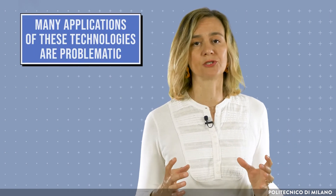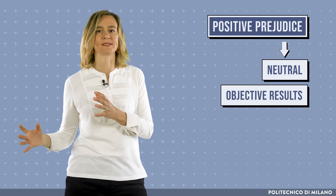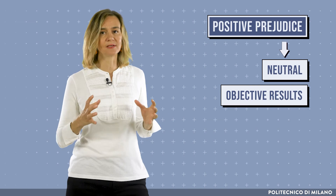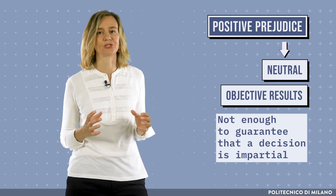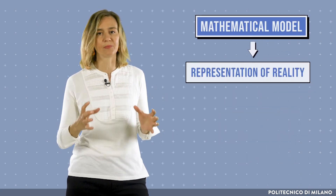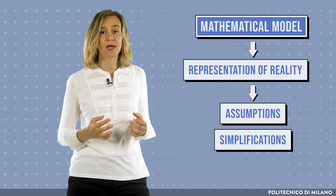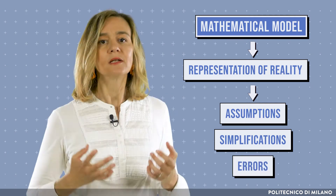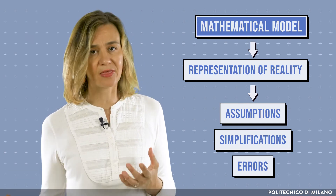However, notwithstanding some opportunities to improve decision processes, many applications of these technologies are problematic. Algorithms are subjected to a positive prejudice, that is, that they are neutral and produce objective results. However, using mathematical and statistical tools is not enough to guarantee that a decision is impartial. A mathematical model indeed is always a representation of reality, so it contains assumptions, simplifications, and even possible errors. These assumptions can limit the application of machine learning algorithms and raise ethical and social issues.